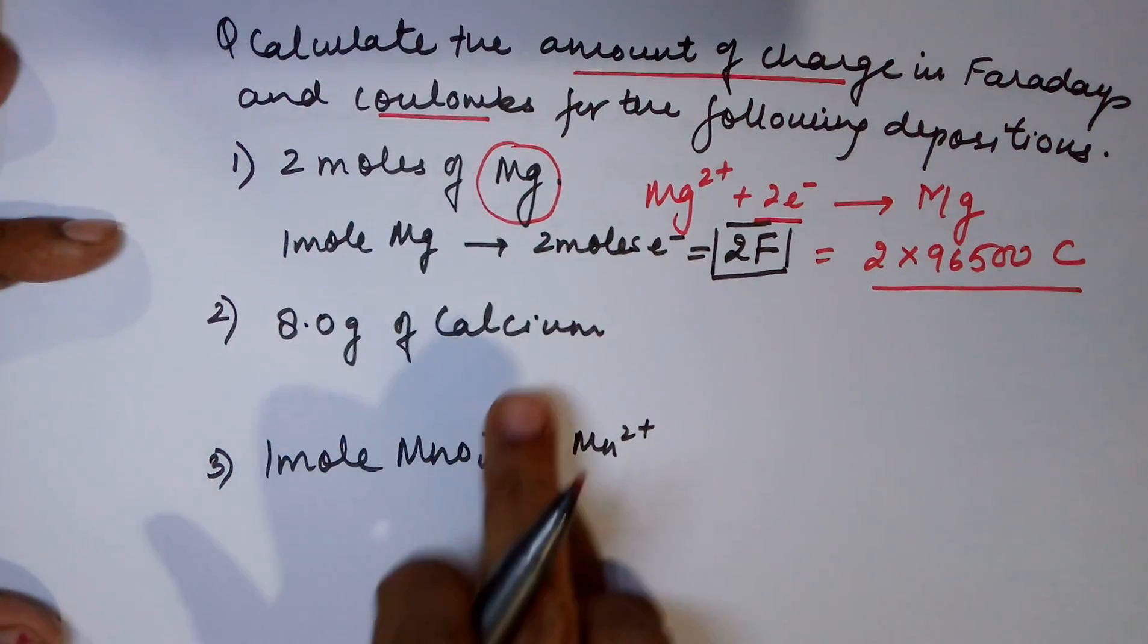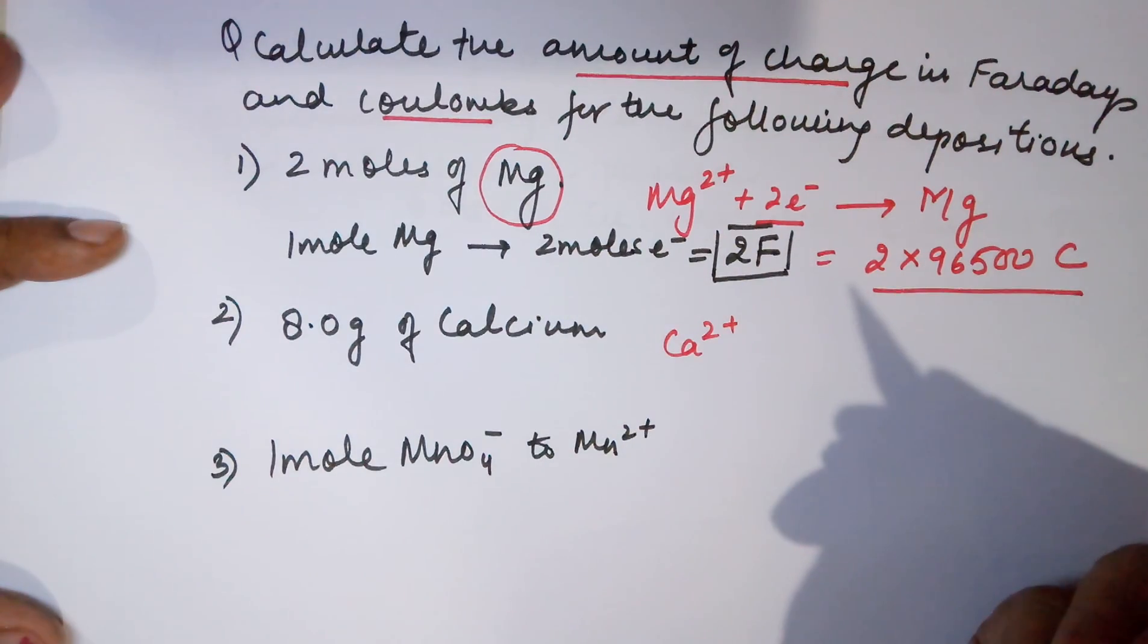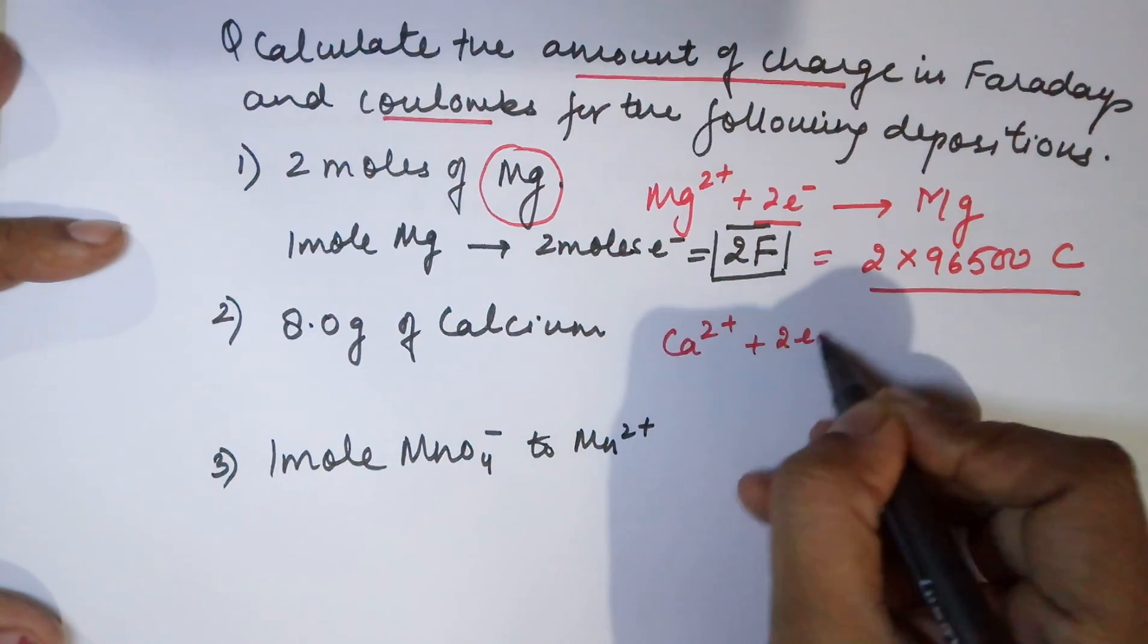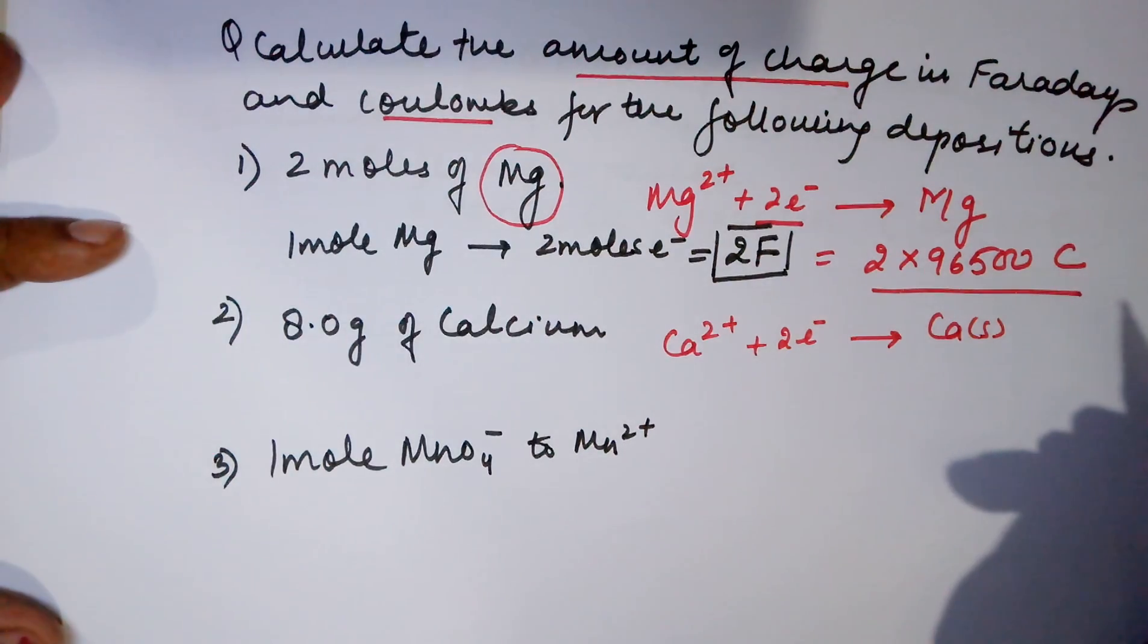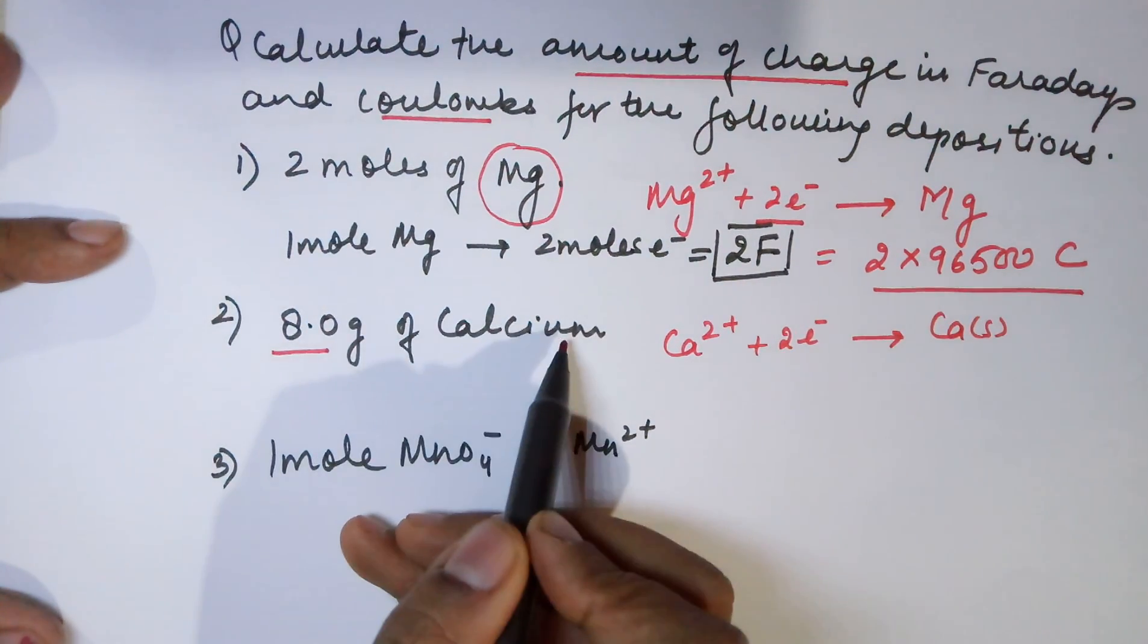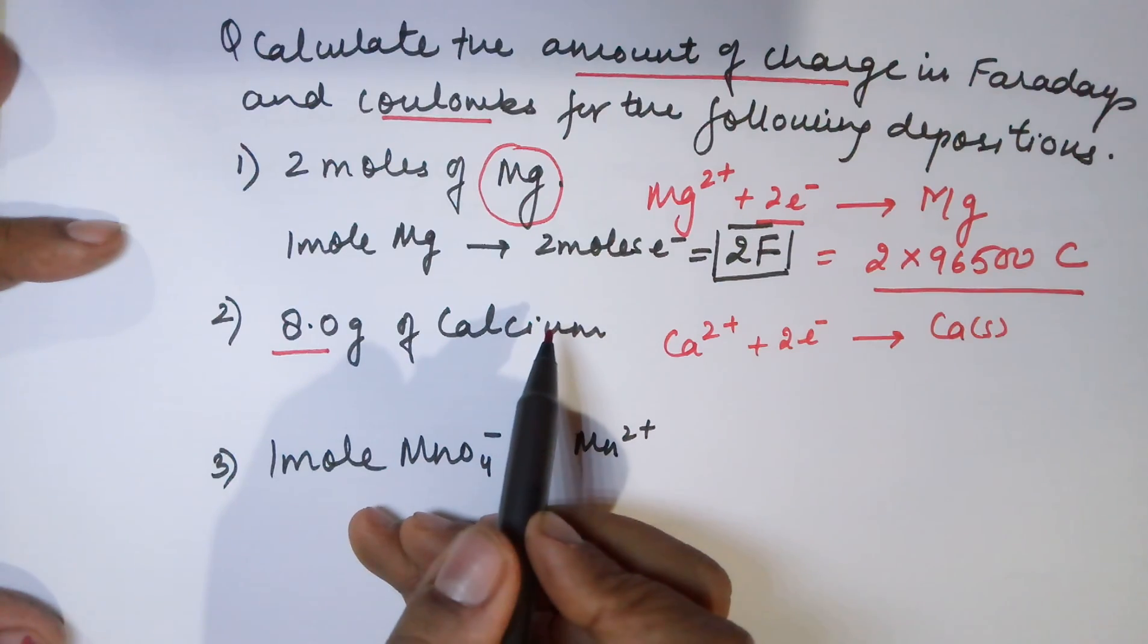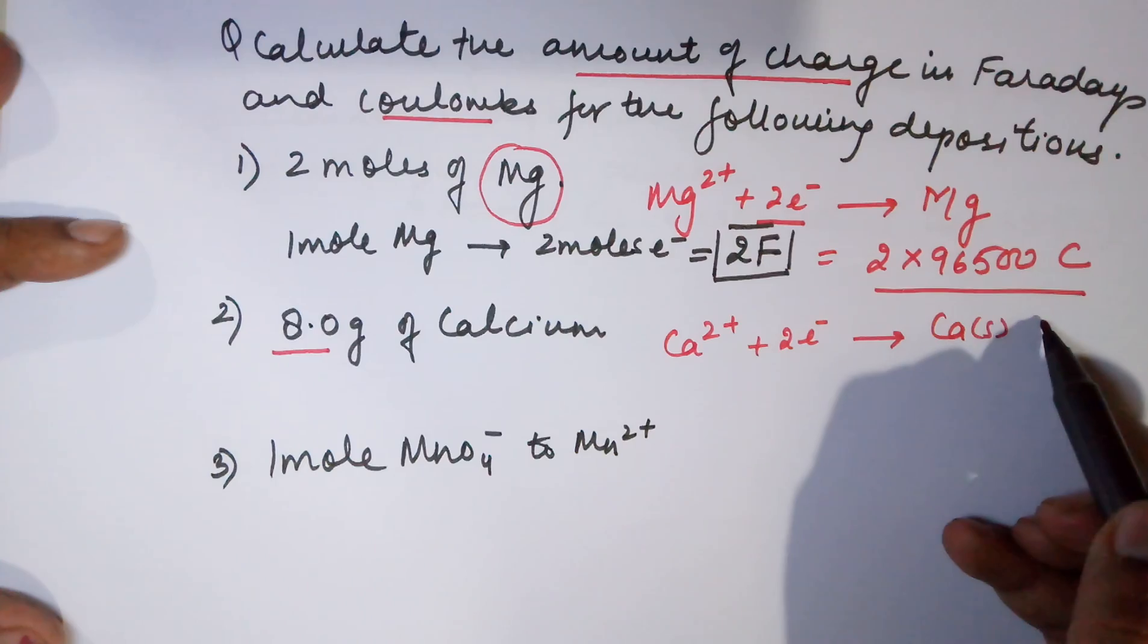Moving to the second part with calcium. For calcium, we know calcium has got a charge of +2. It would accept 2 electrons to become calcium solid which would be deposited. Since you are given the question as 8 grams of calcium, the question is no more for moles. So you need to convert your moles into grams also.